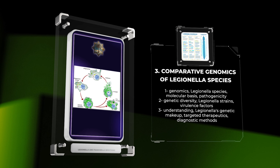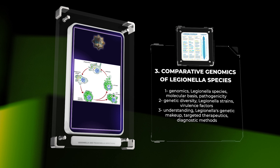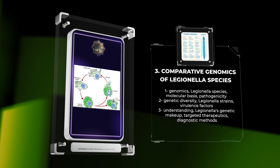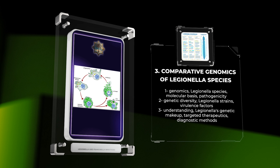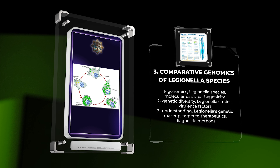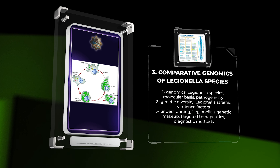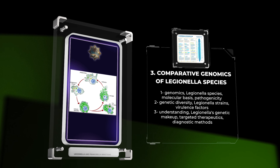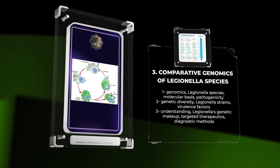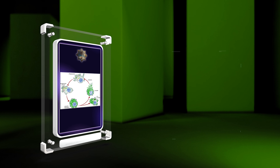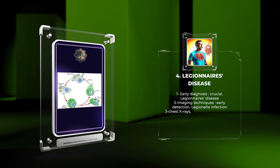Legionella is primarily transmitted through contaminated water. Biofilms in water systems play a crucial role in the survival and spread of Legionella. We will explore how Legionella colonizes biofilms, the challenges it presents, and strategies for prevention through water management and disinfection protocols.